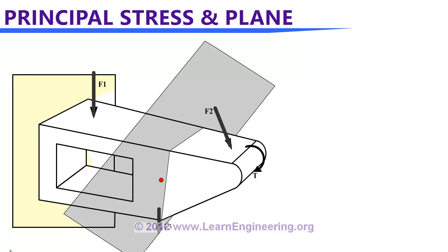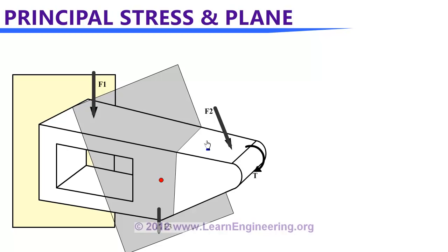There could be infinite number of planes passing through this point, and normal stress values on each plane will be different from one another. But there will be one plane on which the normal stress value will be maximum — that plane will be known as the principal plane, and the normal stress on that plane will be known as principal stress.